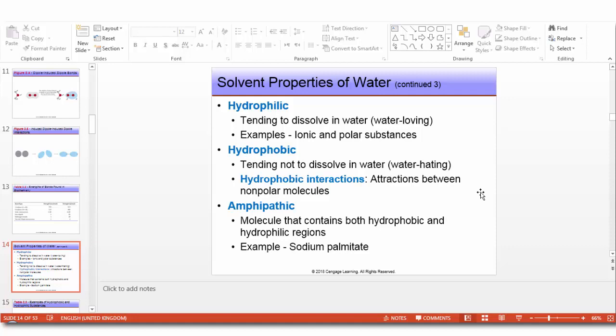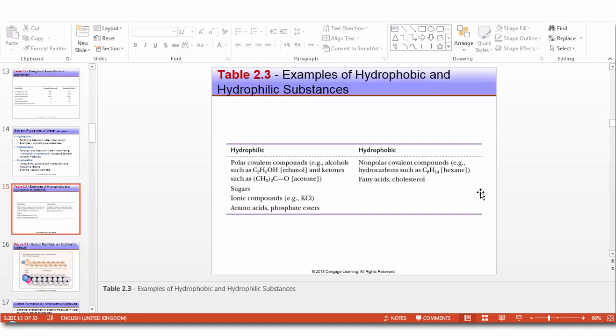If we look at this table, we see two columns, one for hydrophilic substances and one for hydrophobic. Examples of hydrophilic substances: all polar covalent compounds like alcohols and ketones, sugars, ionic compounds like all salts, amino acids, and phosphate esters. All these are hydrophilic, water-loving. Whereas non-polar covalent compounds like hydrocarbons such as hexane, benzene, fatty acids, cholesterol, all these hate water. So they are referred to as hydrophobic substances.